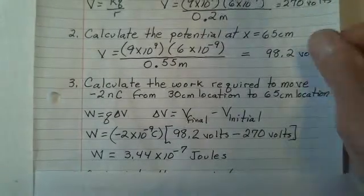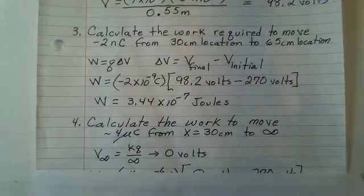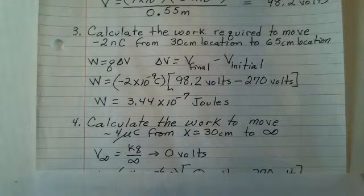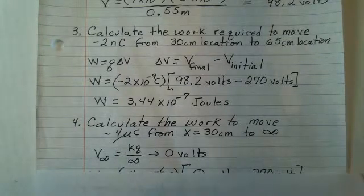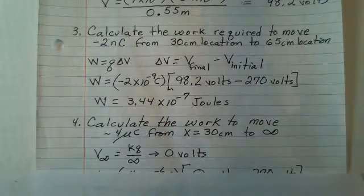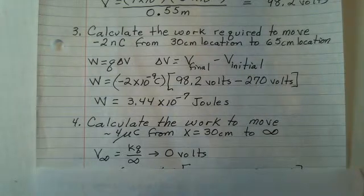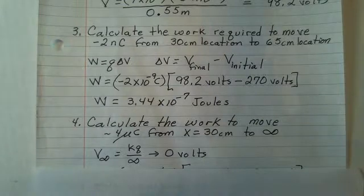Let's do a different charge and different arrangement in the final location. So we're going to take minus 4 microcoulombs and start at 30 centimeters and move to the position of infinitely far away from our charge. We have to do a new calculation for this potential final. V at infinity is equal to 0.